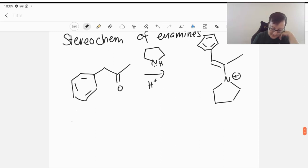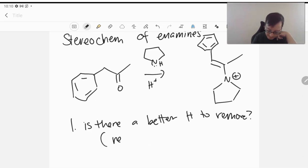So the first things to consider is, is there a better H to remove? That's your regiochemistry. So which side is the alkene going to form on? Is it going to form on the left side or the right side of our iminium? That's what the charged intermediate is called, iminium. And now that we know which side it's going to be, we're looking at stability of the products there.